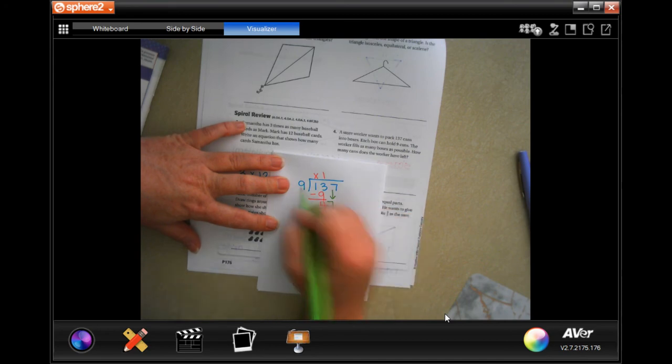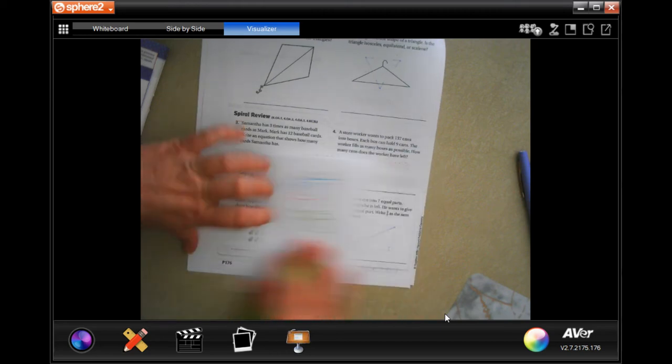The closest we're going to get to 47 is 45 if we multiply it by five. So five times nine is 45, we're going to have two cans left over.